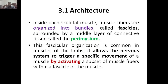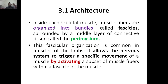The skeletal muscle is organized in bundle form, and the bundle is covered. This fascicular organization is common in limbs. It allows the nervous system to trigger specific movement of muscle by activating a subset of muscle fibers within the fascicles of the muscle.